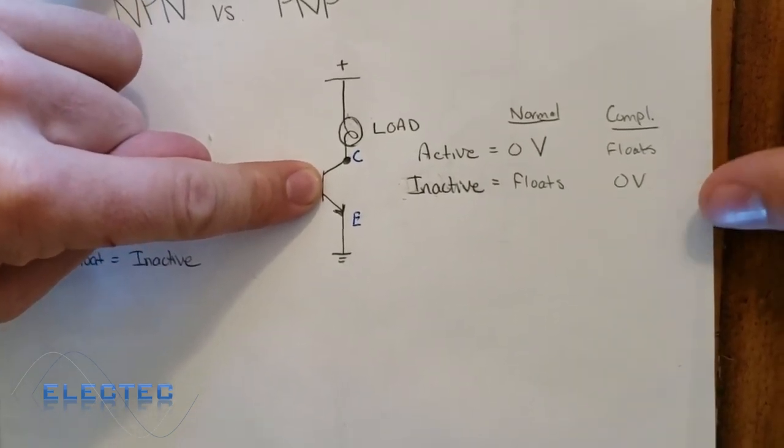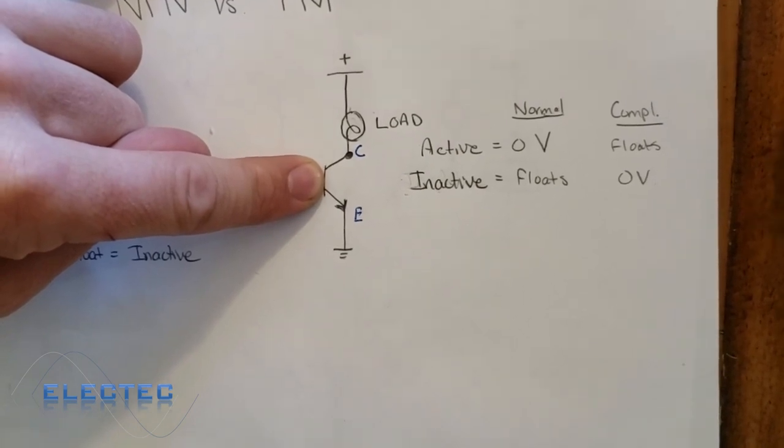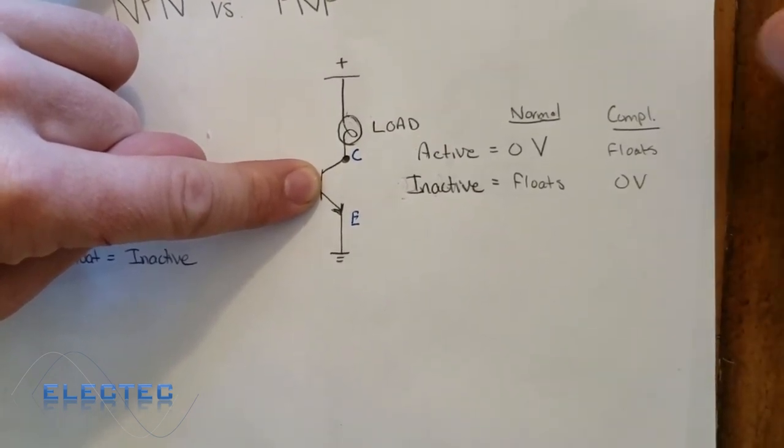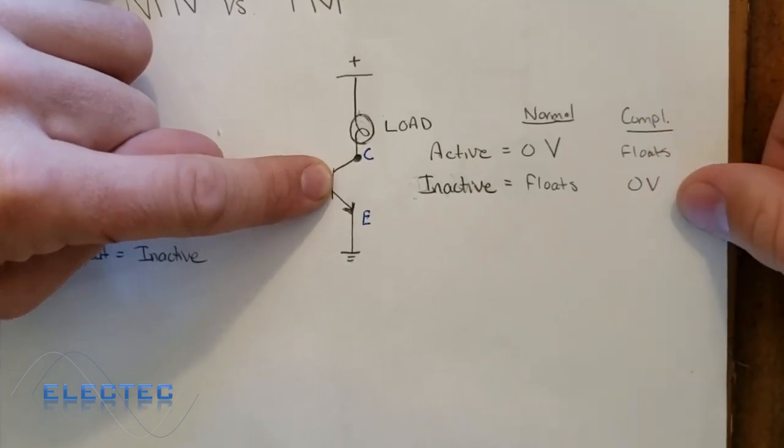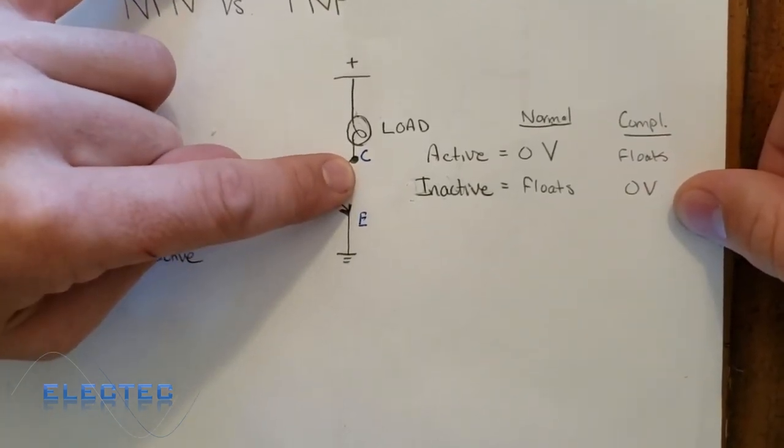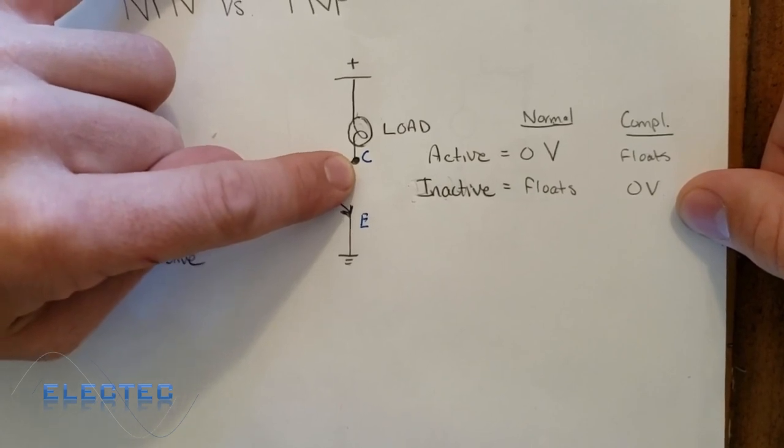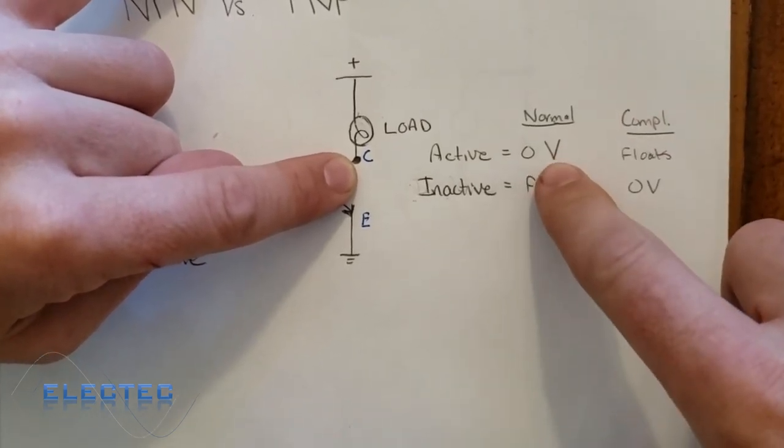to turn, when we turn it on, let's say it's an inductive prox. For example, we put a piece of metal in front of it. It turns on. What it does is it sinks the load. Or as I said before, it sets this collector to the sinking state, so it sets it to zero volts, as you can see here.